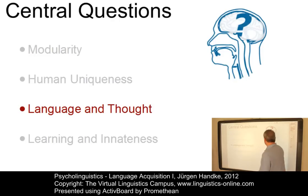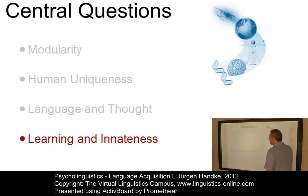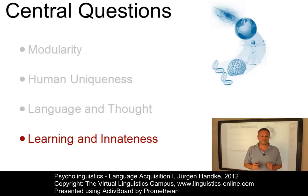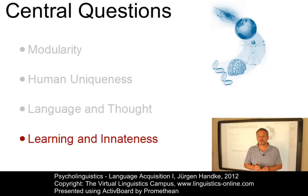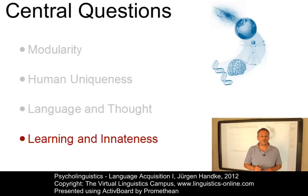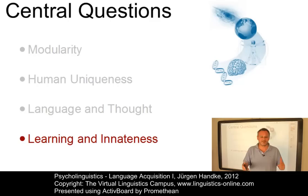And finally, the question concerning the relationship between learning and innateness. All children have some innate capacity for language, but it depends on where a child is brought up — whether he or she will acquire English or Japanese, for example. So both heredity and environment play a role in language development. But how do the two interact? That's a very important research question in linguistics and psycholinguistics.